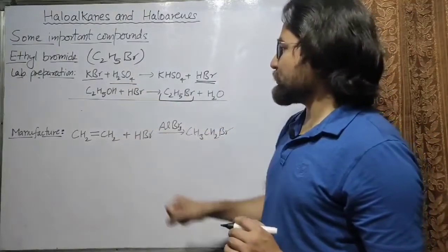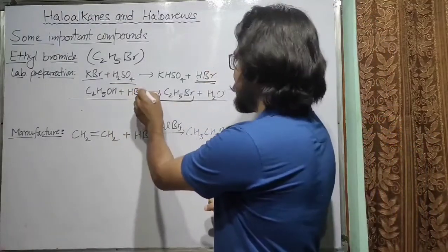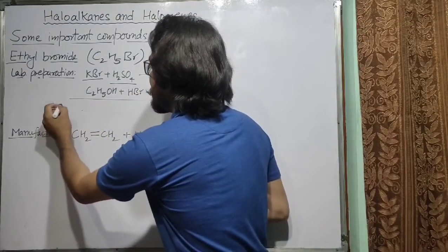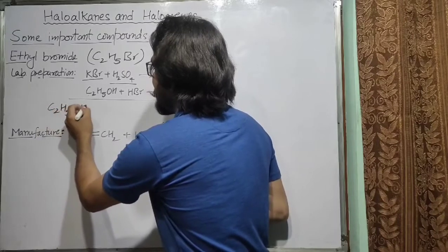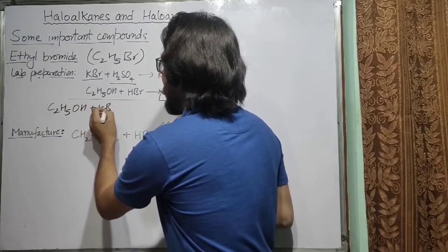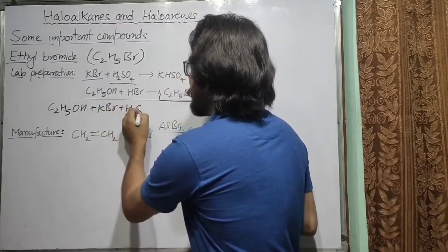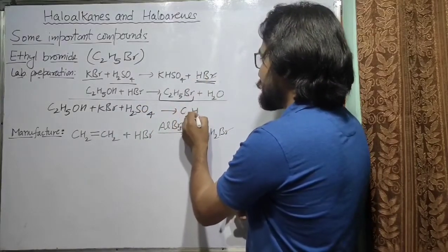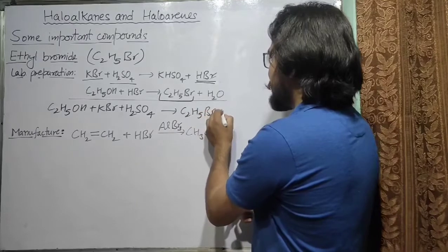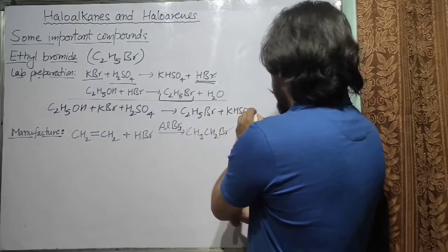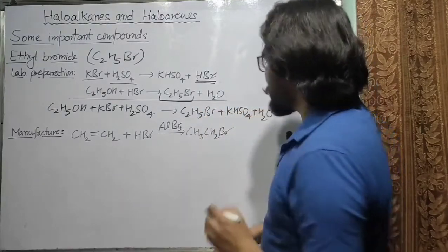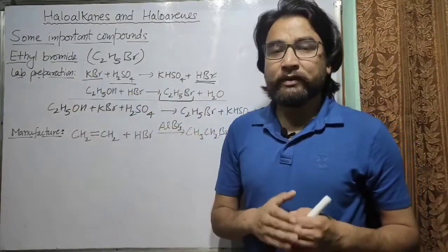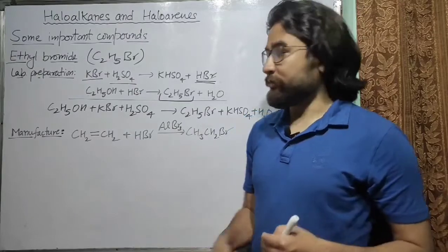Combining these two reactions and eliminating HBr, the overall reaction for the preparation of bromoethane in the lab can be written as: C2H5OH + KBr + H2SO4 → C2H5Br + KHSO4 + H2O.